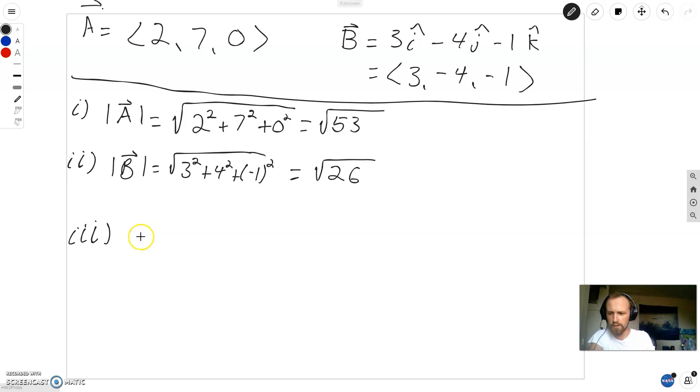For part 3, we want the magnitude of A plus B. So I want the magnitude of 2 plus 3 is 5, 7 plus negative 4 is 3, and 0 plus negative 1 is negative 1. And this equals the square root of 5 squared plus 9 squared plus 1 squared, whatever that comes out to be.